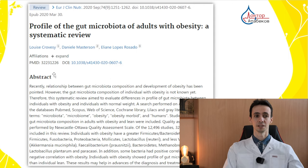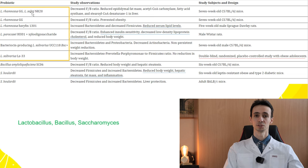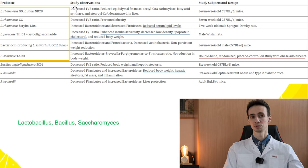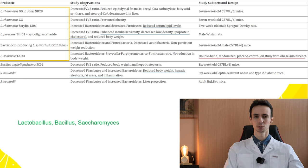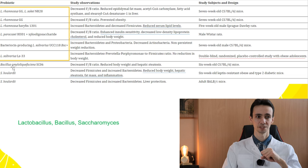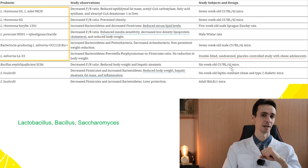There is a systematic review where they gathered many different studies and found an association between high Firmicutes and obesity. You can see a table of different investigations. Lactobacillus — these are already probiotics, the capsules or liquids you usually take — can help to influence the balance in gut flora. They can decrease Firmicutes that are pro-appetite and pro-fatness, and increase Bacteroidetes that are pro-immunity. Also, Bacilli or Saccharomyces may help to reduce appetite, obesity, and improve immunity in the guts.